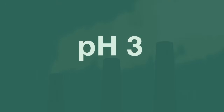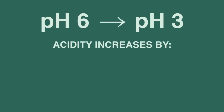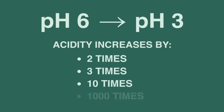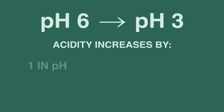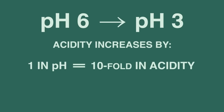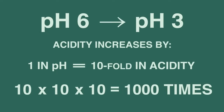When the pH changes from 6 to 3, what do you think the acidity increases by? Two times? Three times? Ten times? A thousand times? Pause and think. Remember that each change of one in pH is a tenfold change in acidity, so changing from 6 to 3 is ten times ten times ten, or a thousand times more acidic.